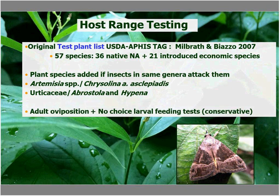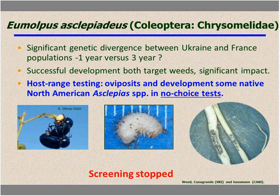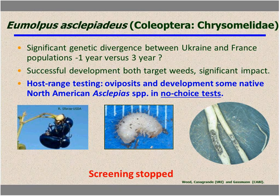The tests conducted were adult oviposition tests and no-choice larval feeding tests. In the oviposition test, will they lay eggs on these plants if exposed to them? In the no-choice larval feeding test, if a larva is on a plant, will it feed on it and develop on it? The tests are quite conservative — we want to make sure nothing negative happens and the insects either feed or die. So what happened in screening? The root-feeding beetle was encouraging in that it developed on the two target weeds, but unfortunately in host range testing it would oviposit and develop on some native North American milkweeds in no-choice tests. Because of that result, the screening has been stopped and it will not be petitioned for release at this time.